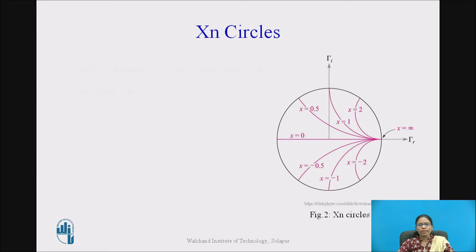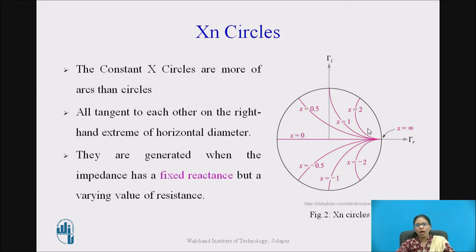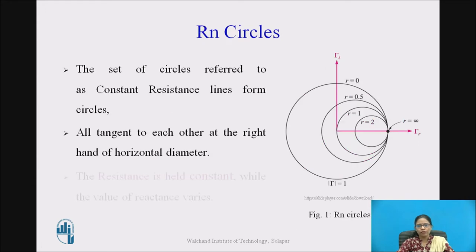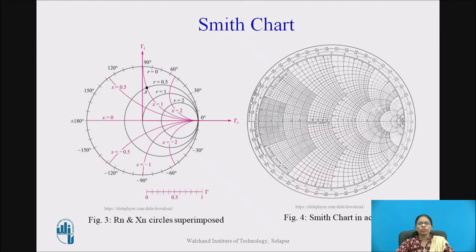XN circles are no longer full circles but arcs — the constant X circles are more of arcs than circles. X = 1, X = 2, X = 0.5, and 0. In the lower half, the XN values are negative: −0.5, −1, −2, and so on. All tangent to each other at the right-hand extreme of the horizontal diameter. They are generated when the impedance has a fixed reactance but a varying value of resistance. When I superimpose the RN circles and XN circles on each other, I get a chart where the circles are the RN circles and the arcs are the XN circles — both superimposed form the Smith Chart.